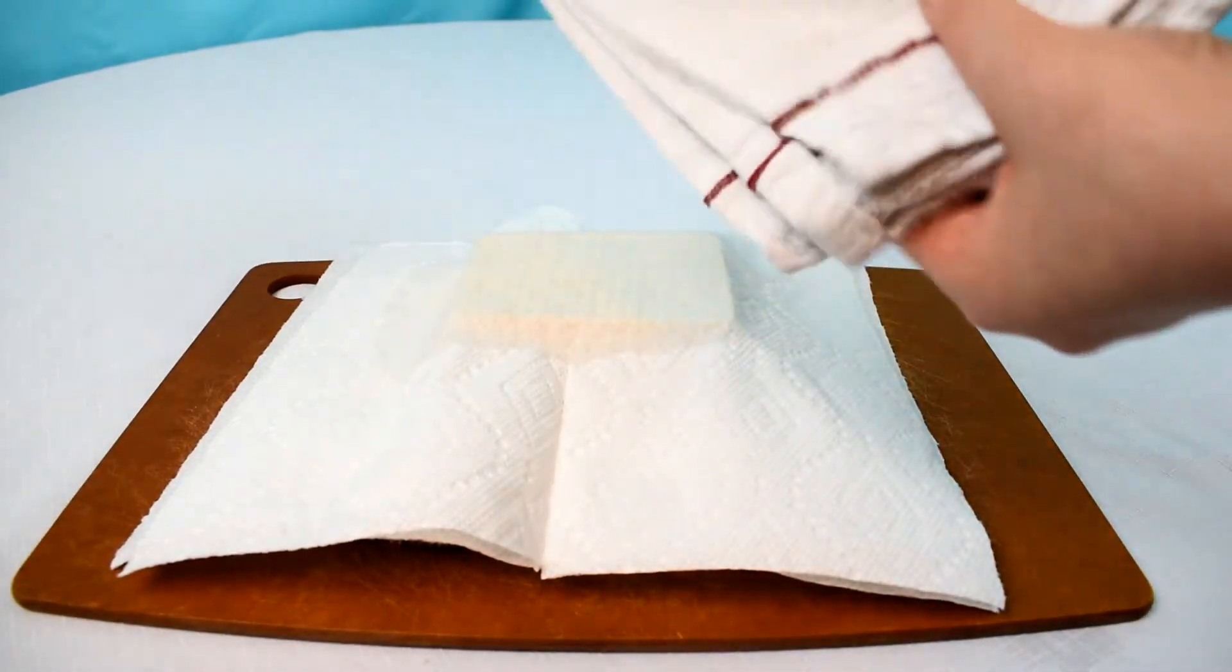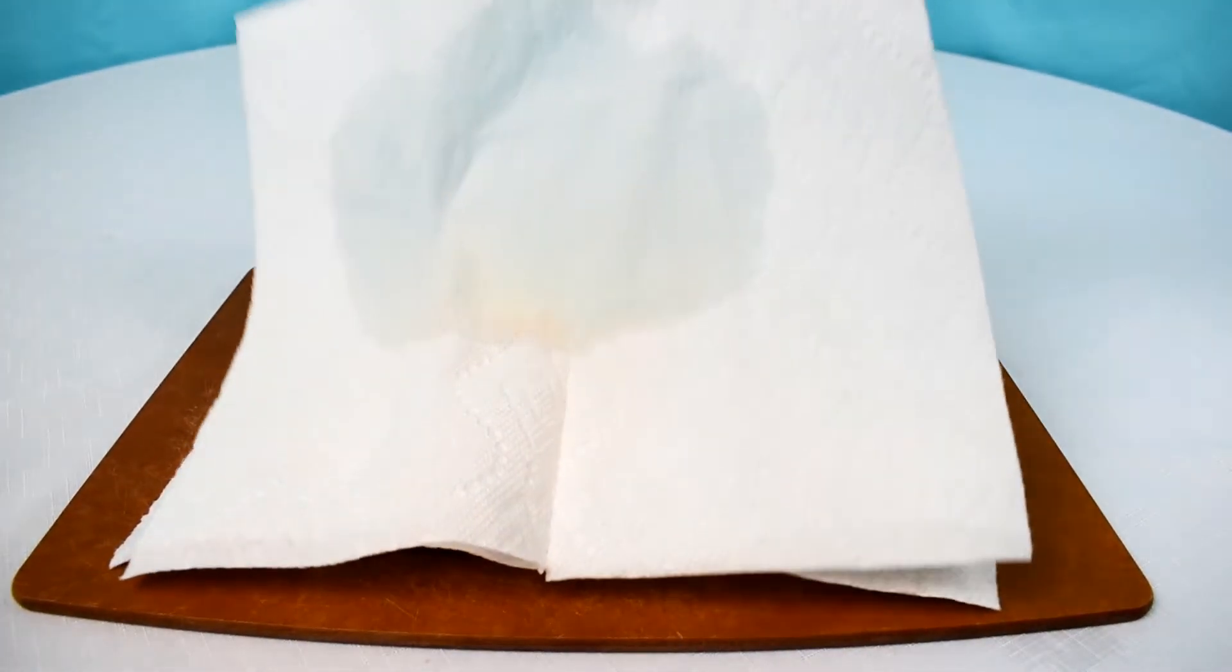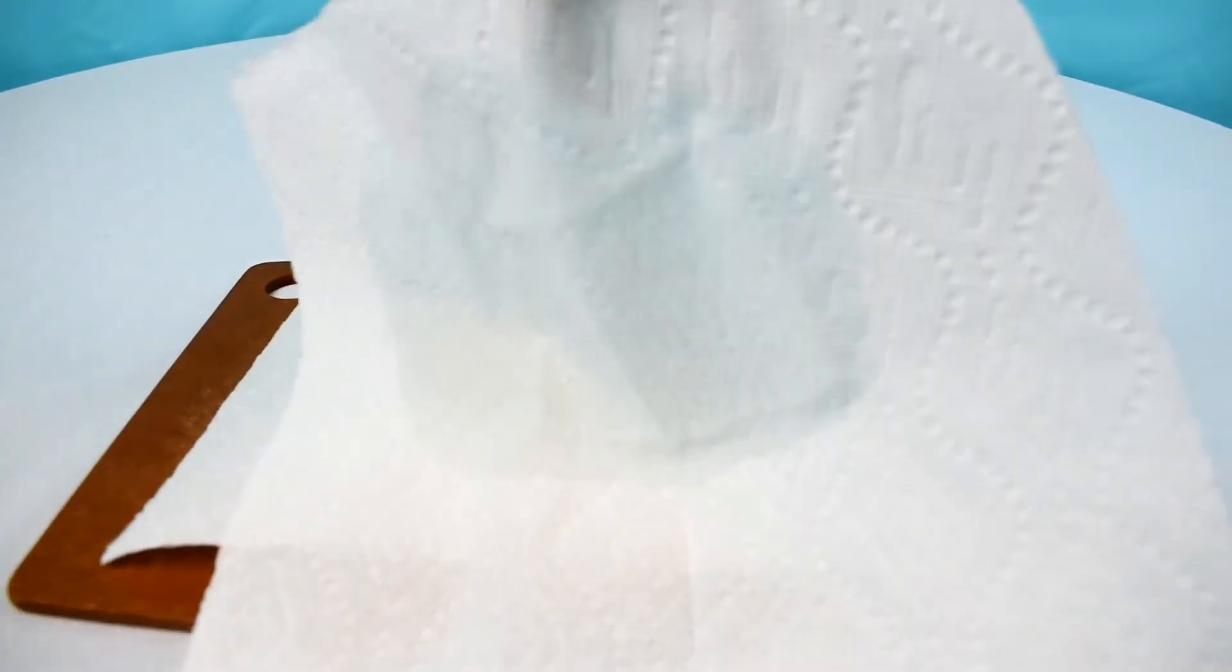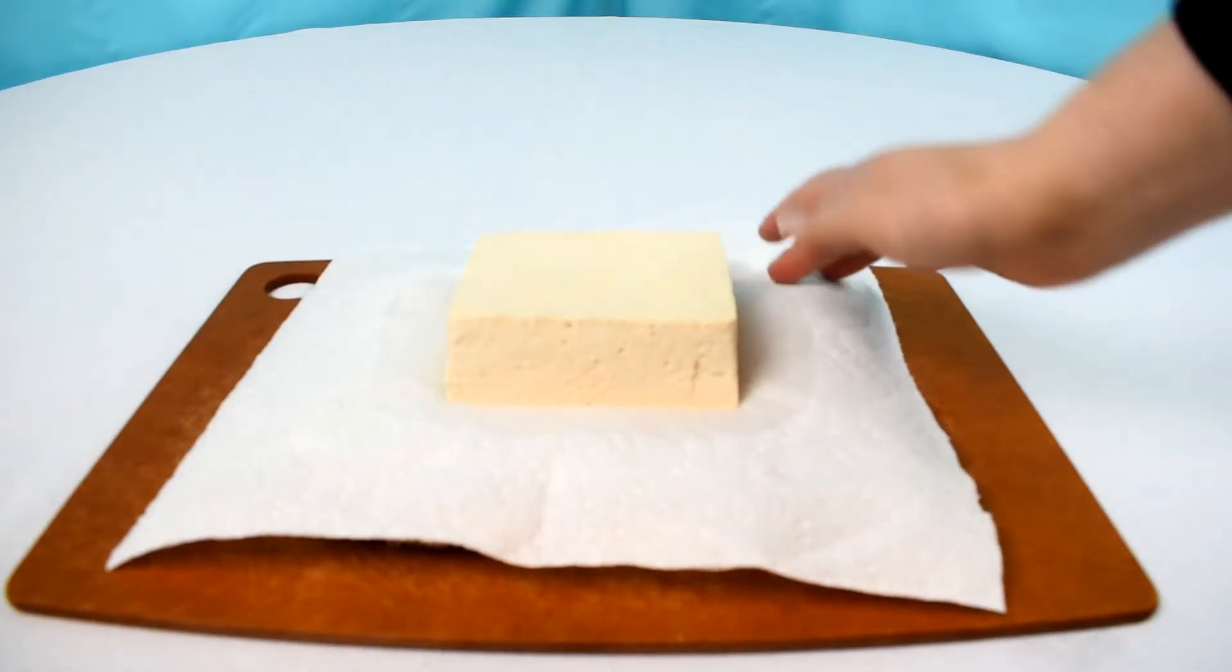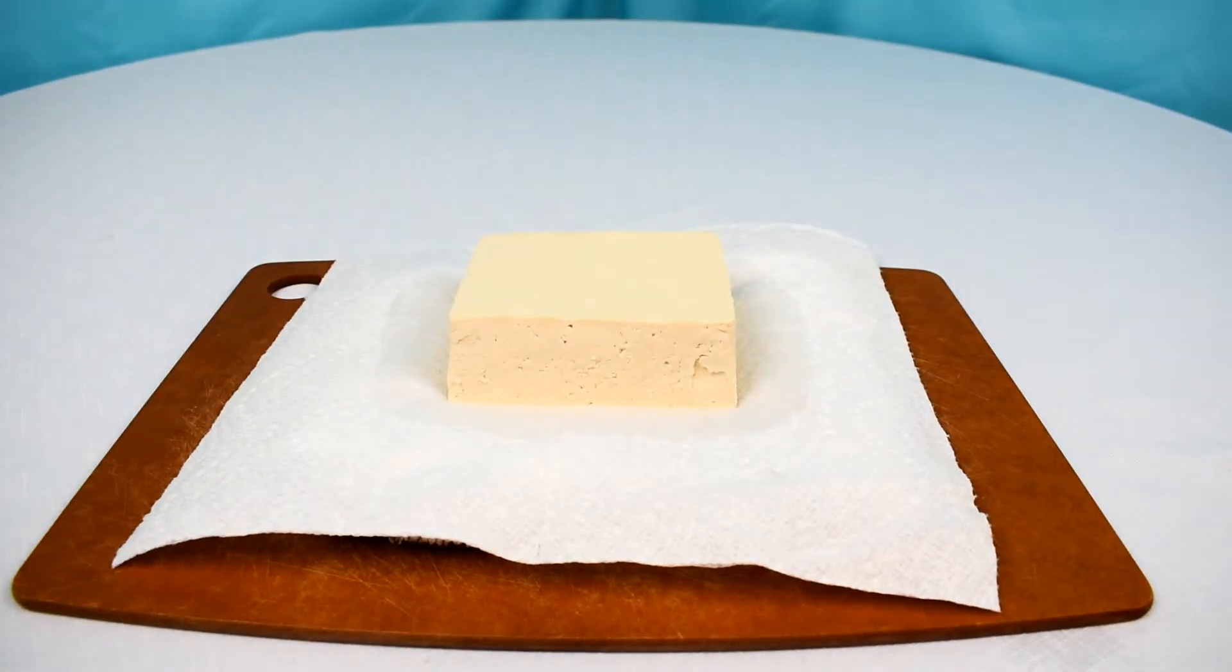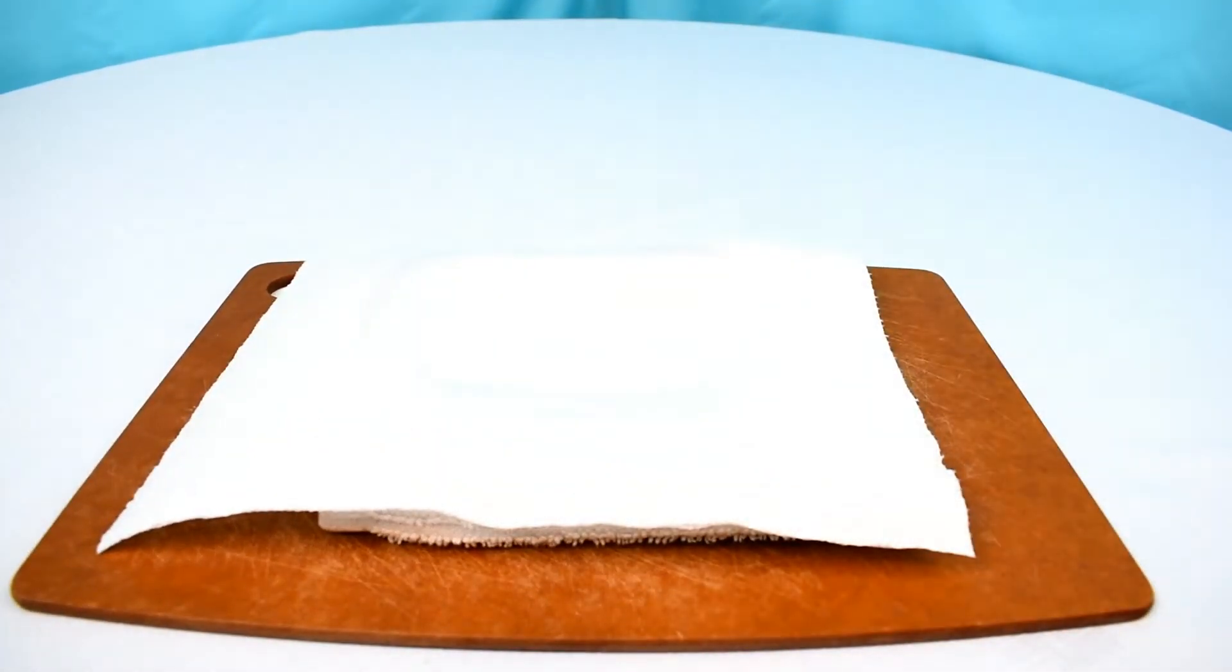And so now we are back to our janky tofu press. I'm just unwrapping it and showing you how much water came out of the tofu. This is why this process is so important because you do not really want to serve that. And if you're going to marinate it, there's no way you can get the flavor into the tofu if it's already filled with some other liquid. So that is why we press it in order to get the flavor in there and so it tastes delicious.